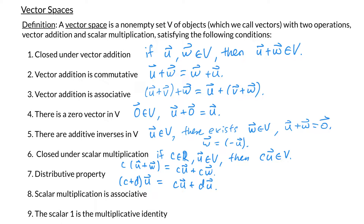Property 8 says that scalar multiplication is associative, meaning that if I have a scalar c and I multiply it to a vector d times u, that's the same as multiplying c and d together first and then multiplying by the vector u. Property 9 says that the scalar 1 is the multiplicative identity. That means for any object u in my set V, the product 1 times u gives u again.